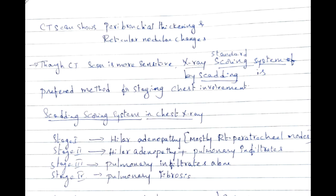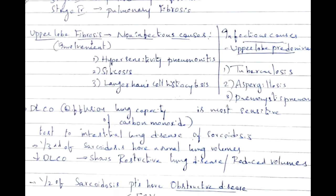Upper lobe fibrosis is seen in non-infectious conditions like hypersensitivity pneumonitis, silicosis, Langerhans cell histiocytosis, and infectious causes like tuberculosis, aspergillosis, and Pneumocystis pneumonia. DLCO (diffusing capacity of carbon monoxide) is the most sensitive test in interstitial lung disease of sarcoidosis. One-third of sarcoidosis patients have normal lung volumes, whereas decreased DLCO is seen in restrictive lung disease. Half of sarcoidosis patients show an obstructive pattern.